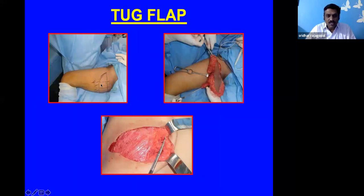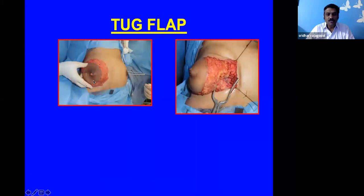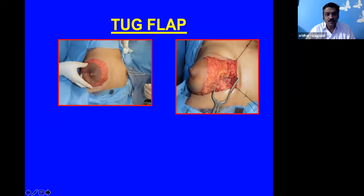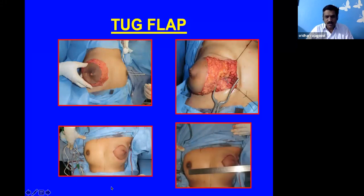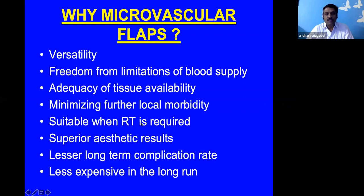The transverse upper gracilis (TUG) flap uses the gracilis muscle with its perforator, suited for small and central reconstruction. The flap is folded on itself to create a mound and anastomosed as a free flap — artery to artery and vein to vein. After reconstruction, near symmetry and nipple-areola complex matching can be achieved; the rotation of the flap gives the appearance of an elevated nipple.